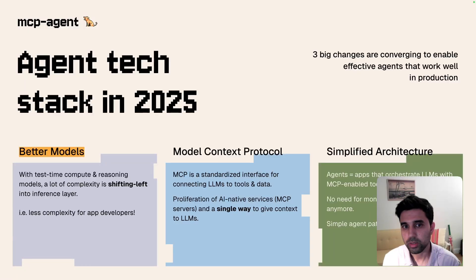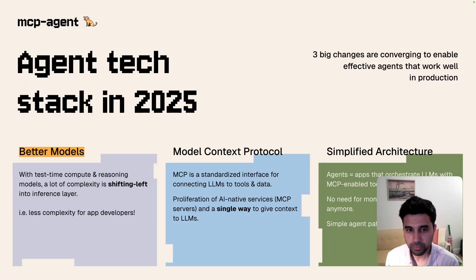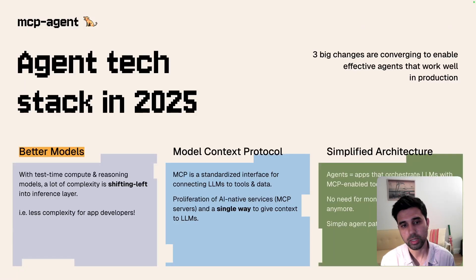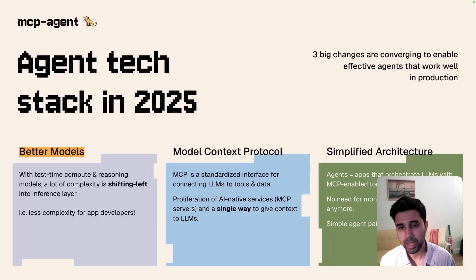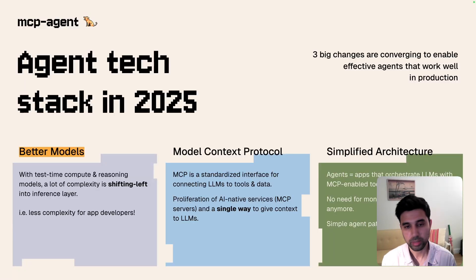What does the tech stack look like for agents in 2025? There are three big changes happening that allow you to build effective agents much more easily than ever before. The first is better models. We have reasoning models and LLMs that are pretty reliable for a lot of use cases. With test-time compute, a lot of the complexity — things like chain-of-thought reasoning, ReAct, or other patterns previously implemented at the framework layer — are now shifting left into the inference layer, reducing the burden on app developers.